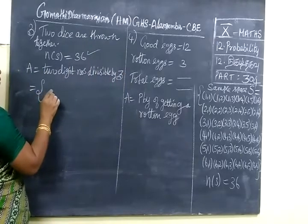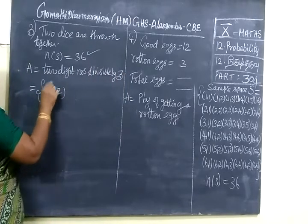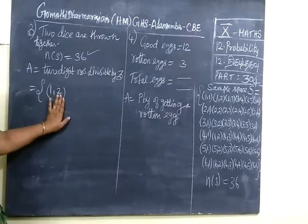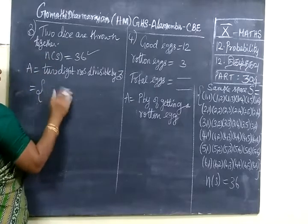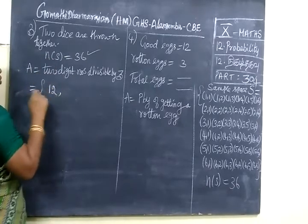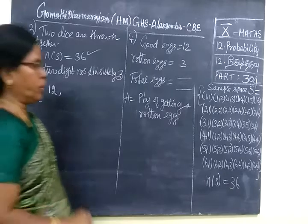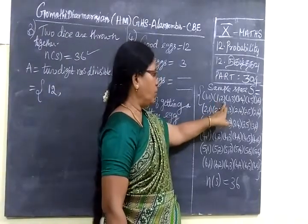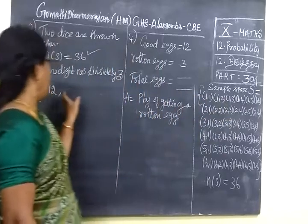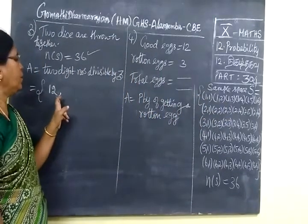You are selecting all the numbers divisible by 3. So if you see the first row, you can write 1, 2. In the 1, 2, it is divisible by 3. But you should not write it 1, 2. It is just 12. So when you select 1, 2, you should write it as 12.